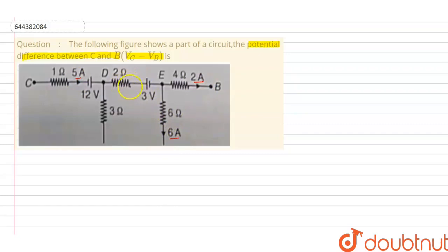So first we need to find the current in this branch. This 2 current is outgoing, so if we add them we will get the current in this branch, 6 plus 2 equal to 8 ampere. And the current in this branch is 5 plus 3, 8 ampere.